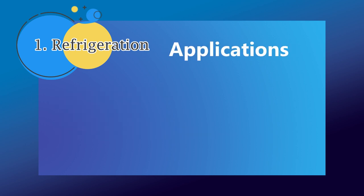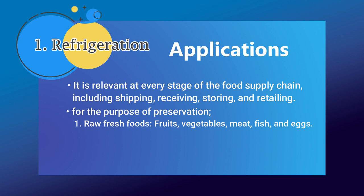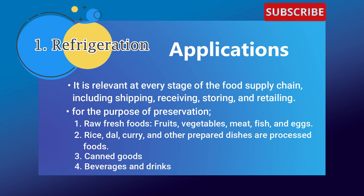Refrigeration is relevant at every stage of the food supply including shipping, receiving, storing, and retailing. For the purpose of preservation, it is applied to: 1) raw fresh foods including fruits, vegetables, meat, fish, and eggs; 2) processed foods such as rice, lettuce, curry, and other prepared dishes; 3) canned goods; and 4) beverages and drinks.